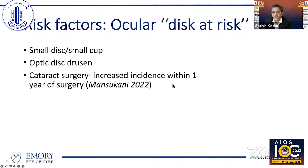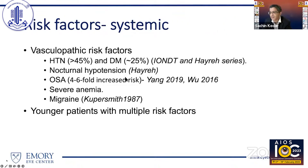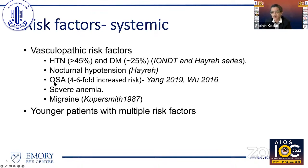Cataract surgery is controversial, but a large series published about a year ago showed a slightly increased incidence of this condition within one year of surgery, particularly in patients with a disc at risk and other vascular risk factors. Major series on systemic risk factors showed these patients do have hypertension and diabetes. Hayreh also proposed that susceptibility to nocturnal hypotension — blood pressure dropping in the early morning — means patients often wake up with visual problems. Sleep apnea increases your risk four to six-fold, particularly in those with a disc at risk.